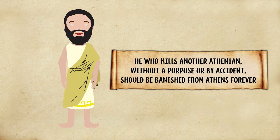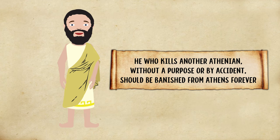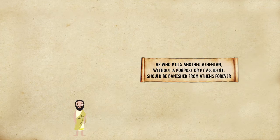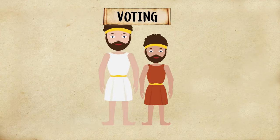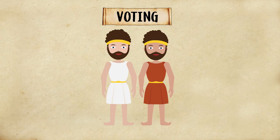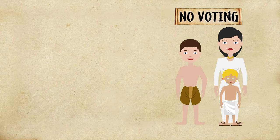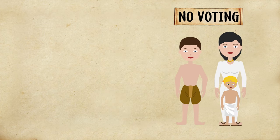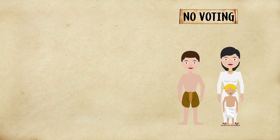Draco is quoted saying, "He who kills another Athenian, without a purpose or by accident, should be banished from Athens forever." All male citizens over 20 years old had a say in government and could vote, but women, children, teens, and slaves could not.